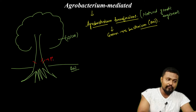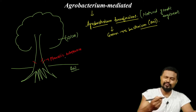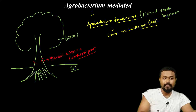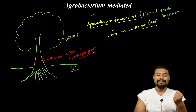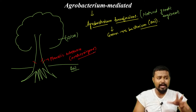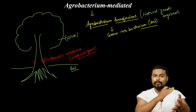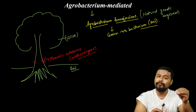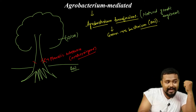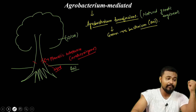There is a phenolic substance release. This phenolic substance is released when the plant faces some wound. If you have a plant, it will have a phenolic substance release. Most dicots have a phenolic substance release, which is acetosyringone. This phenolic substance acts as a signal for this bacterium.